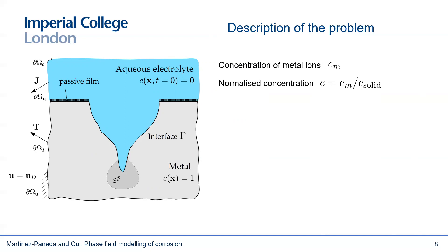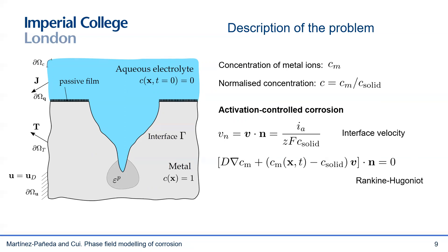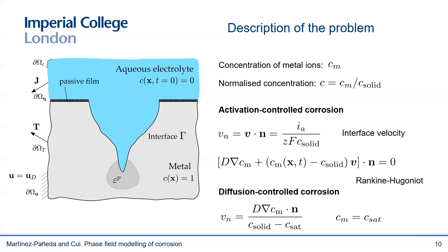I will call C the normalized concentration of metal ions such that it's equal to one in the metal and zero far away from it in the electrolyte. At what speed does metal dissolution occur? That depends on whether we are under activation control corrosion or diffusion control corrosion. In activation control corrosion, the velocity of the moving pit boundary follows Faraday's second law, and the concentration of dissolved ions at the interface can be calculated according to the Rankine-Hugoniot condition. Corrosion becomes diffusion-controlled when the surface concentration reaches the saturation value due to accumulation of metal ions on the pit boundary, and the pit interface velocity becomes controlled by the diffusion of metal ions away from the pit boundary.